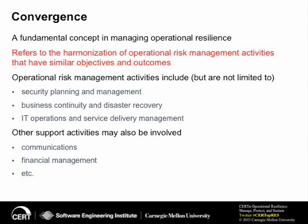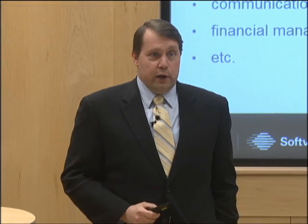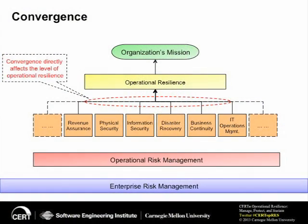Let's move on to this concept of convergence. What we're talking about here is harmonizing and bringing together all of the operational risk management activities that have similar objectives and outcomes, and working on those in a coordinated, cohesive way within the organization. There are a number of examples of these activities — security planning, communications, financial management, IT operations. An organization has a mission, the mission is supported by business processes, those processes operate based on having access to critical assets. The convergence is really about harmonizing all of those activities under a common set of objectives, as shown in the dashed red circle at the middle of the slide.